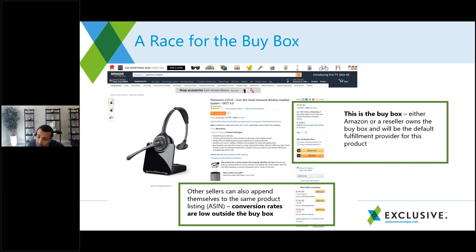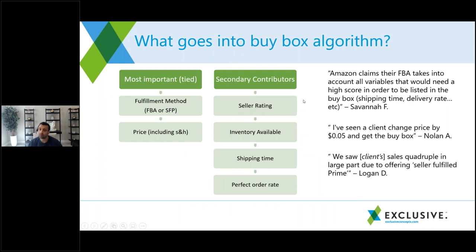If you're one of 50 resellers on a particular ASIN, your goal is winning the buy box — being the seller that fulfills the order when someone clicks 'Add to Cart.' The buy box is won mostly by a combination of price and fulfillment method. Other factors do come into play: seller rating, inventory, shipping time, and your perfect order rate. But price is still the most important thing.